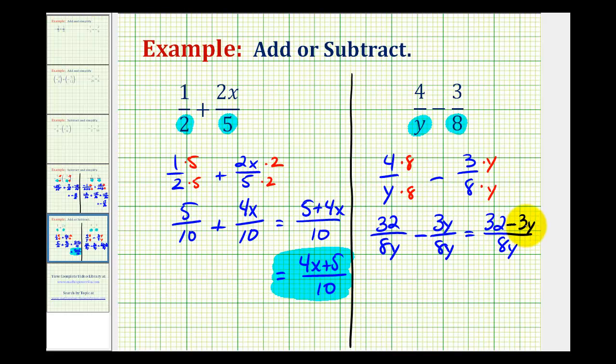But if we wanted to have the variable term first in the numerator, we would have negative 3y plus 32 all over 8y. These differences are equivalent. It just depends on the style of the textbook.